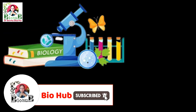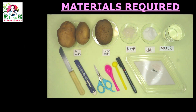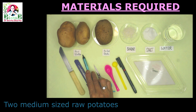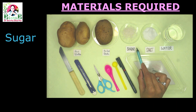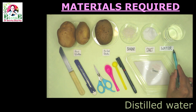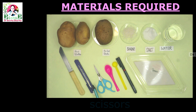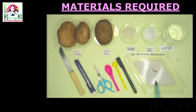It's time to begin with the practical part. To carry out this activity you need two medium-sized raw potatoes, one boiled potato tuber, common sugar, common salt, distilled water, a knife, a cutter, a pair of scissors, a small spoon or small spatula, one marker, and one lab tray or any shallow flat container.